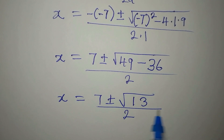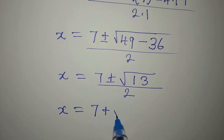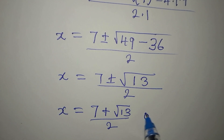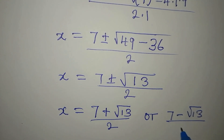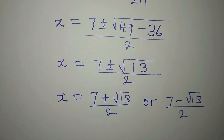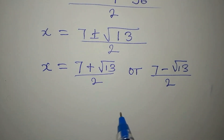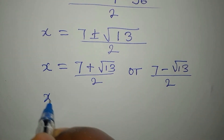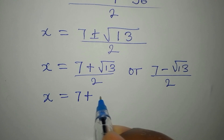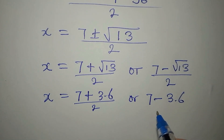Dividing by 2: the square root of 13 cannot be simplified because there is no perfect square factor of 13 apart from 1. So our two solutions are x equals 7 plus square root of 13 over 2, or x equals 7 minus square root of 13 over 2. The square root of 13 is approximately 3.6, so x is approximately 7 plus 3.6 over 2 or 7 minus 3.6 over 2.